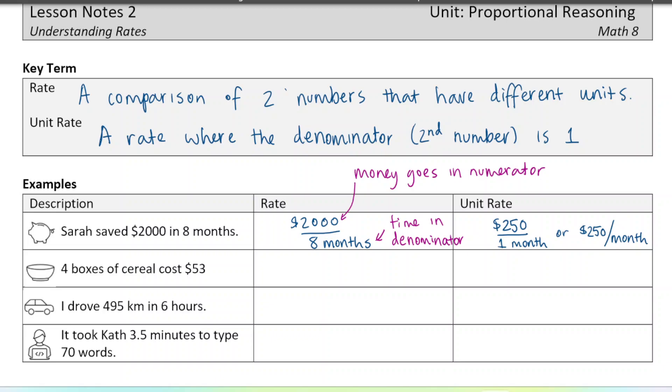Okay, so four boxes of cereal cost fifty three dollars. So again we're going to go with our rule even though it's written in the other order - we're going to put the money on the top. So fifty three dollars on top, fifty three dollars for four boxes. That's our rate. And to get the unit rate we divide those numbers. So fifty three divided by four is thirteen dollars and twenty five cents, and it's going to be thirteen dollars and twenty five cents for one box, or thirteen dollars and twenty five cents per box. That's what you would probably see on the price tag for the box of cereal.